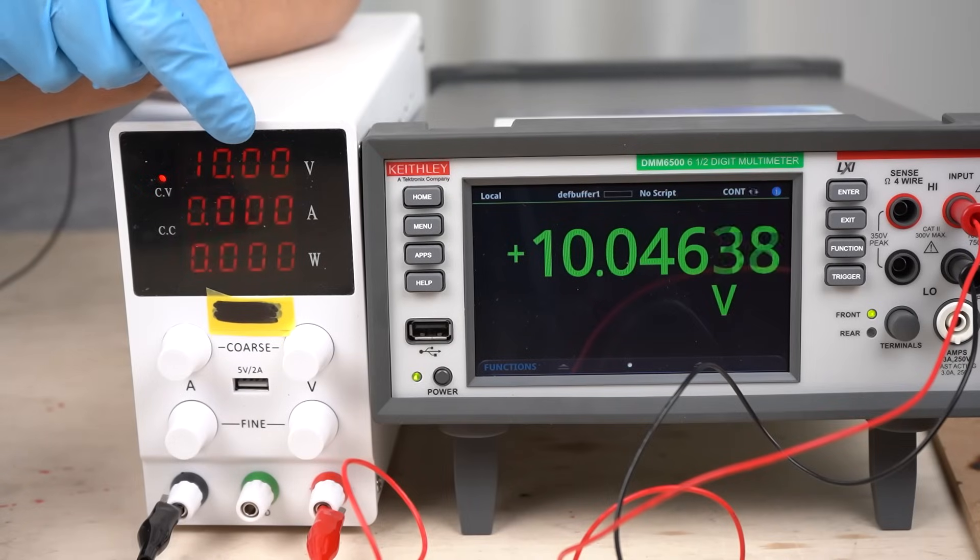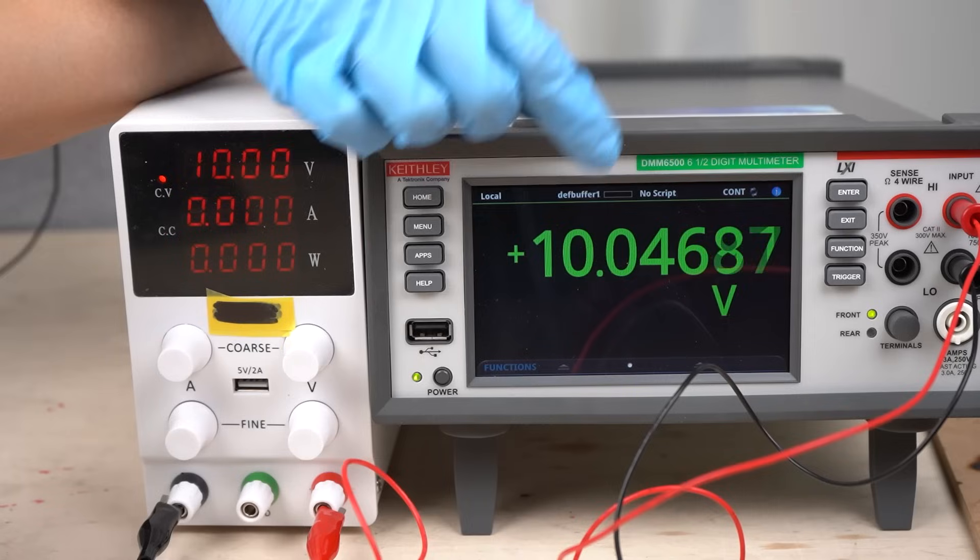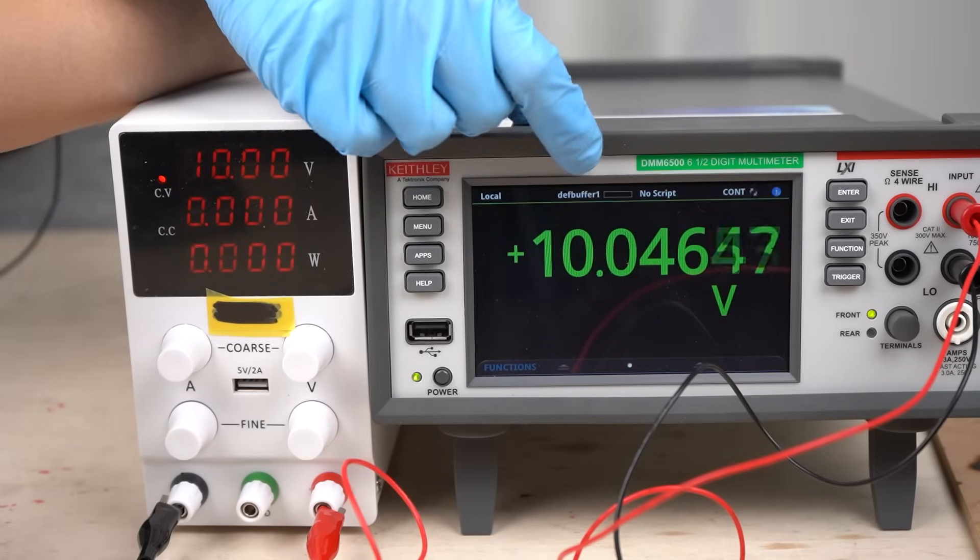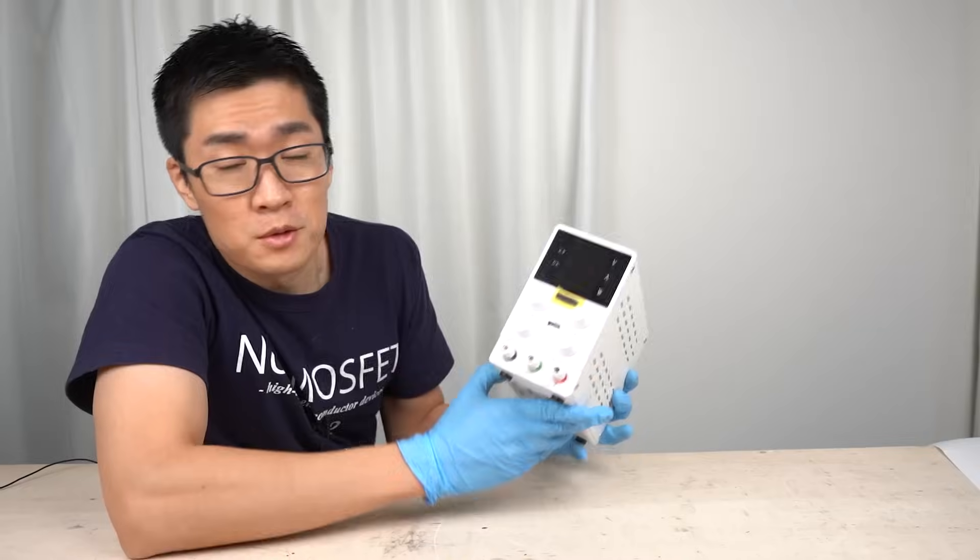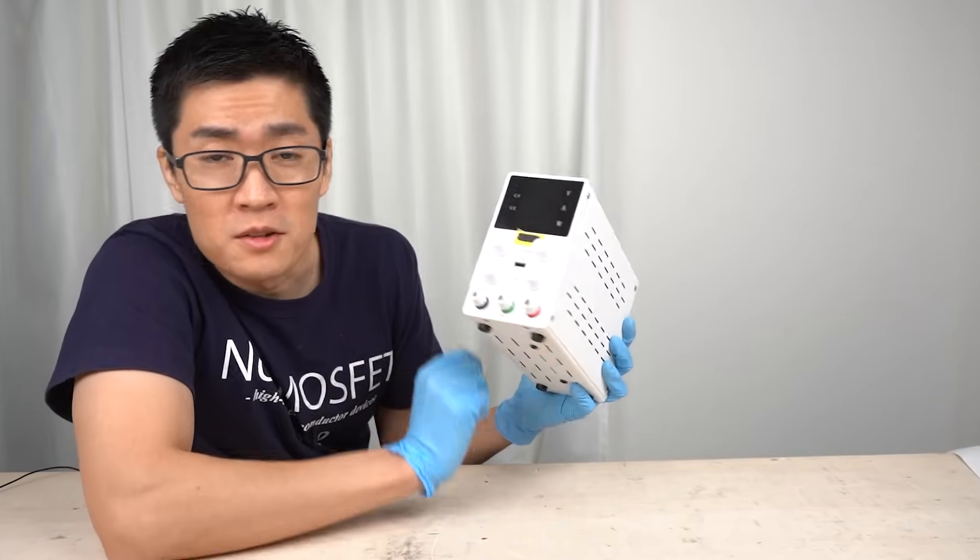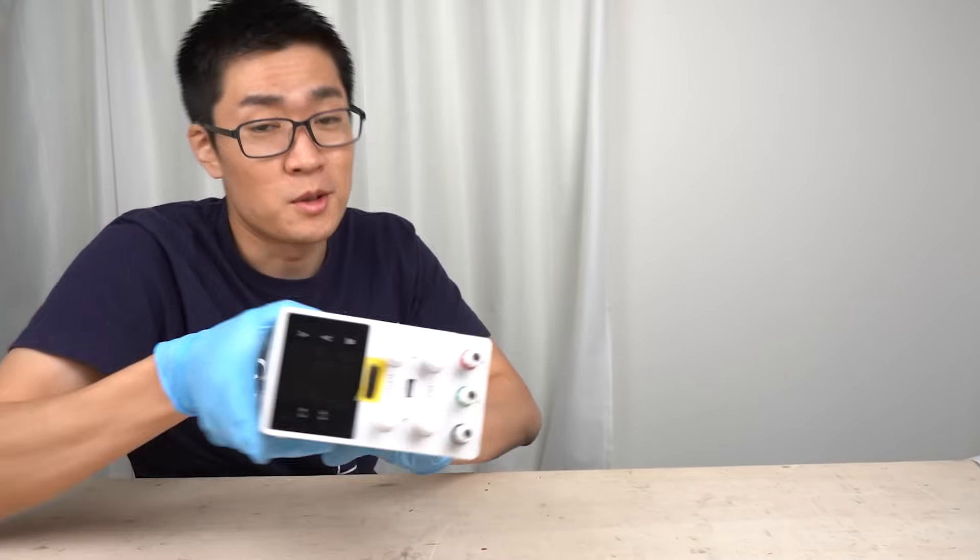I'll check how accurate the displayed voltage is. There's a difference. I have prepared a relatively accurate voltmeter here. There is a difference of about 50 millivolts between the displayed voltages. This power supply can apparently output up to 300 watts at 60 volts five amps.